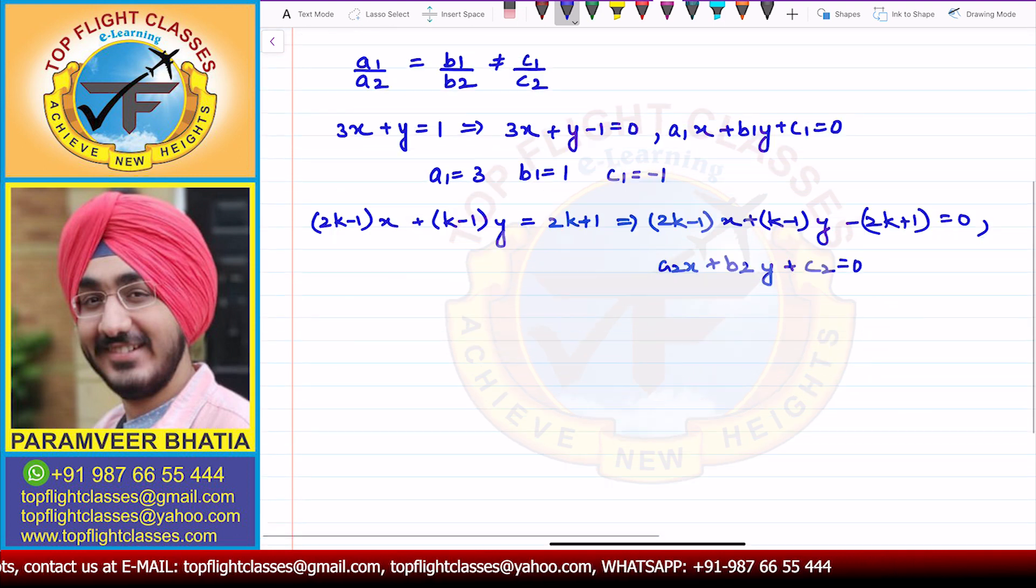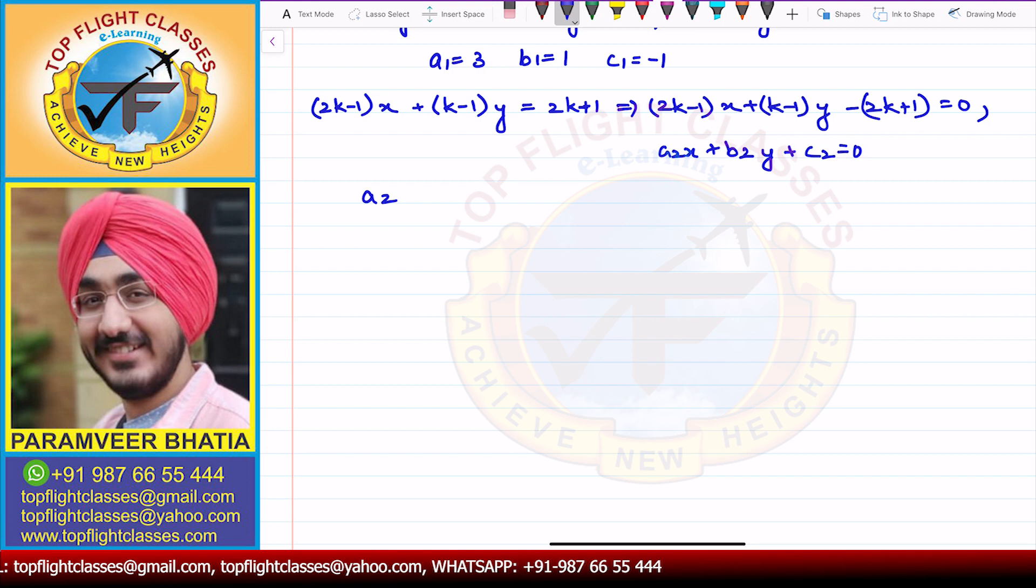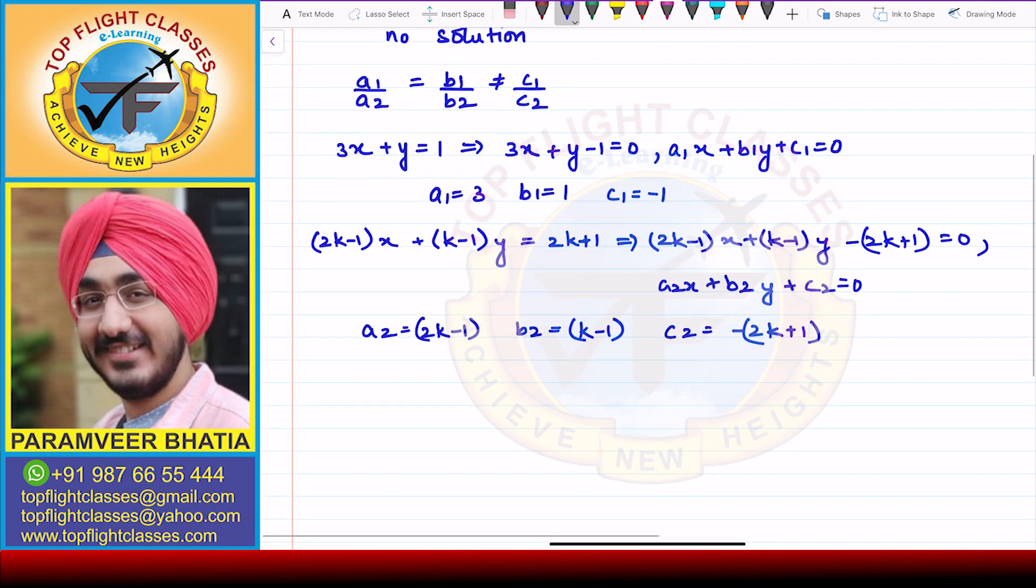From here I will get that a2 is equal to (2k-1), b2 is equal to (k-1), and c2 is equal to minus (2k+1). Now we know that since there are no solution for the given pair of linear equations, that means that a1 by a2 will be equal to b1 by b2 will not be equal to c1 by c2.